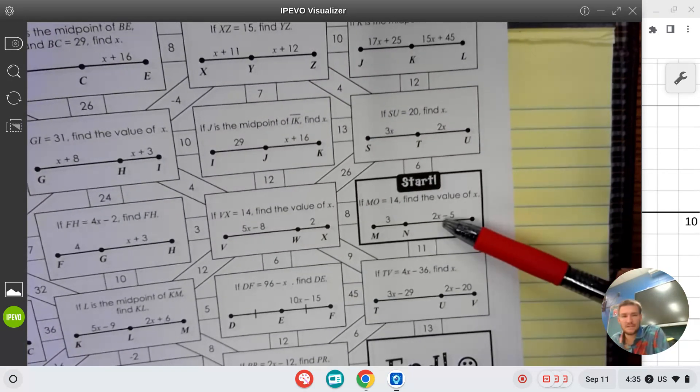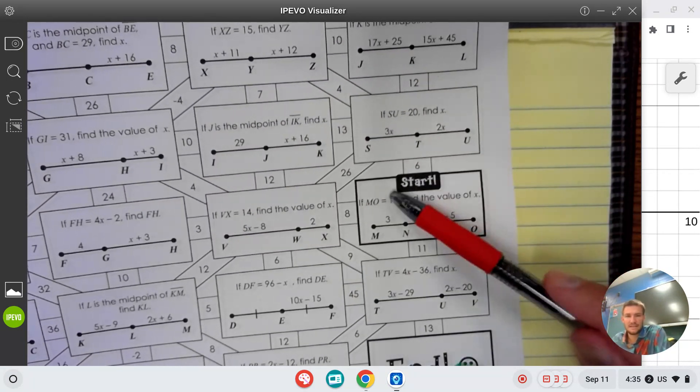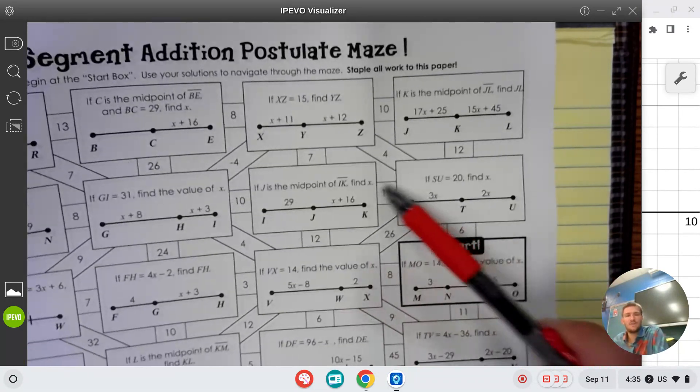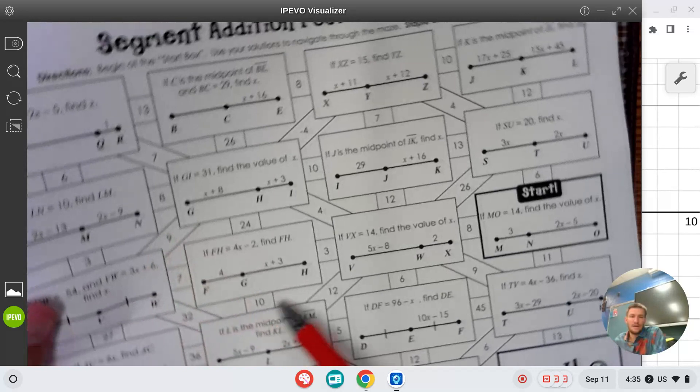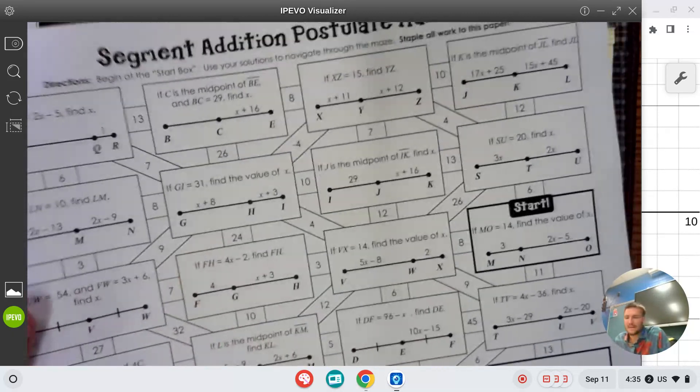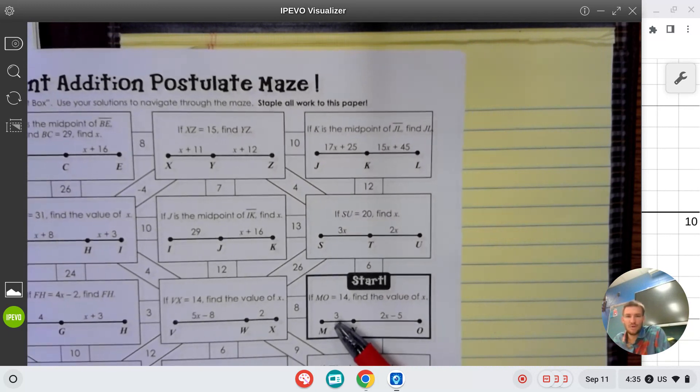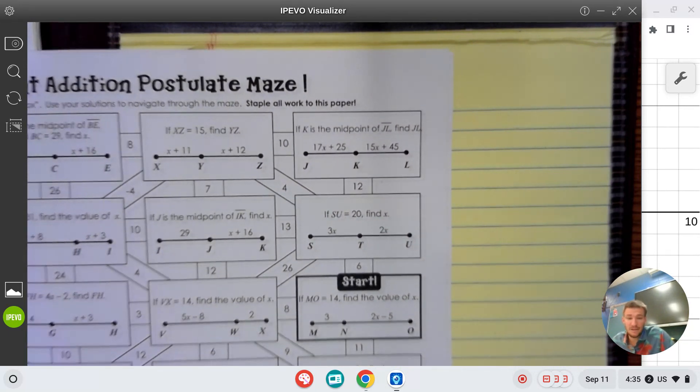The way these mazes work is we're going to start in this square and the answer is going to lead us in a direction. Whichever direction it leads us, we're just going to follow these paths. I'm going to get you going, do four or five questions, then I'm going to be done and you're going to be expected to finish.